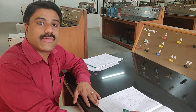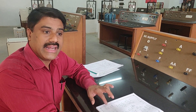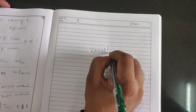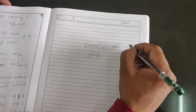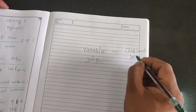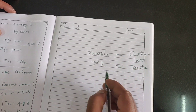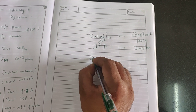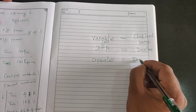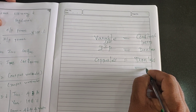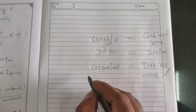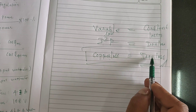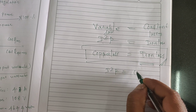A transformer will deliver higher efficiency when its losses satisfy a specific condition. The variable losses — that is, I²R losses (copper losses) — should be equal to the constant losses (iron losses). So to simply conclude: when copper loss is equal to iron loss, a transformer will deliver maximum efficiency. This is a common interview question — at what condition does a transformer deliver maximum efficiency? The answer is: copper loss = iron loss, or I²R loss = constant loss (at no-load conditions).